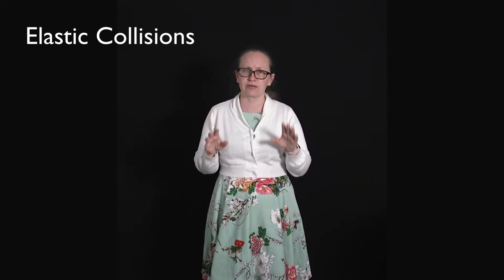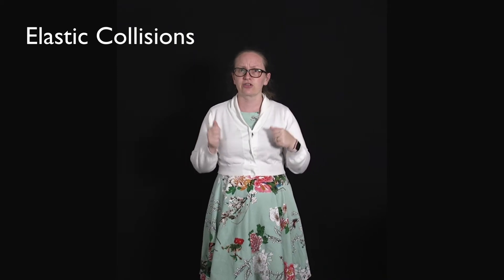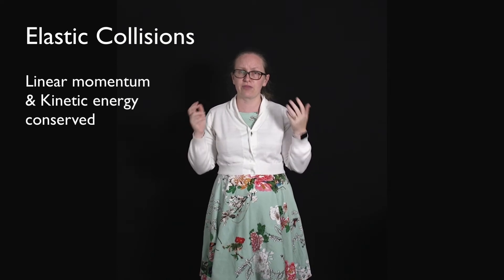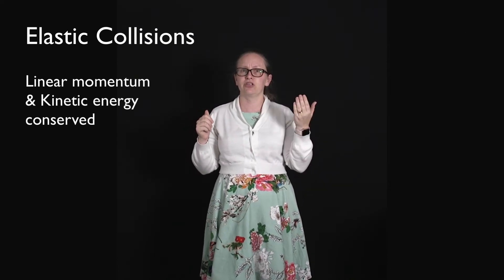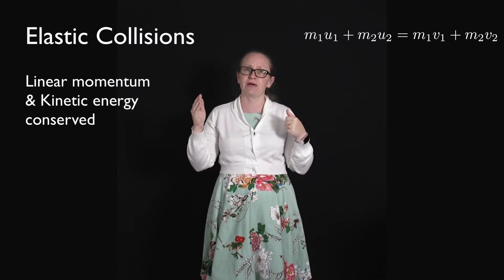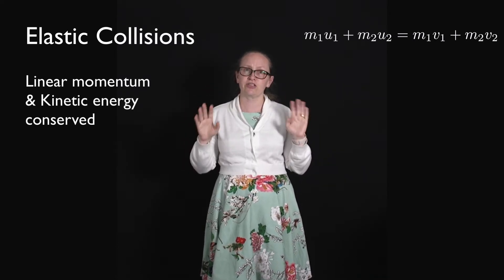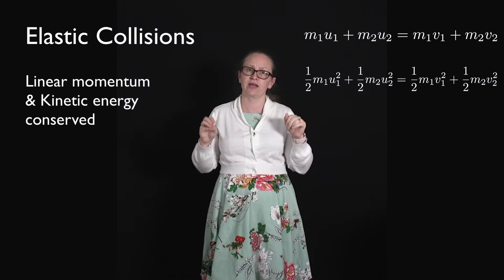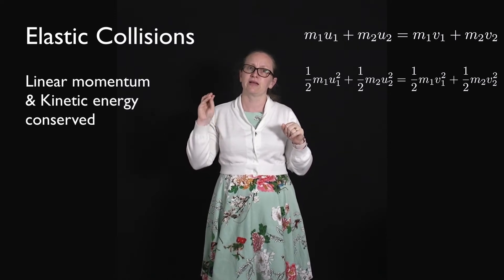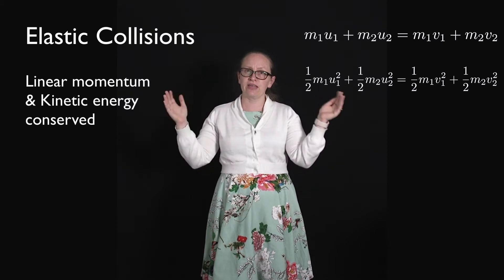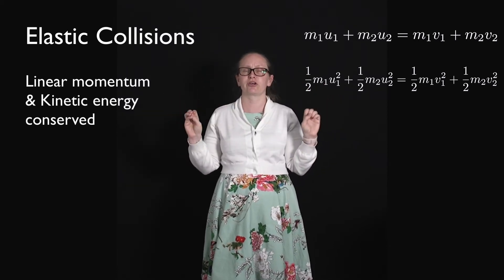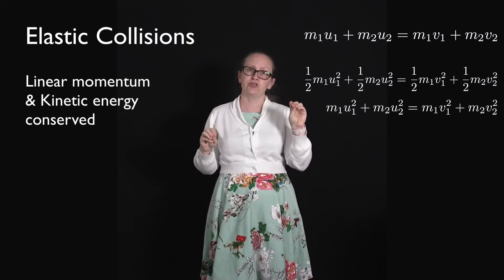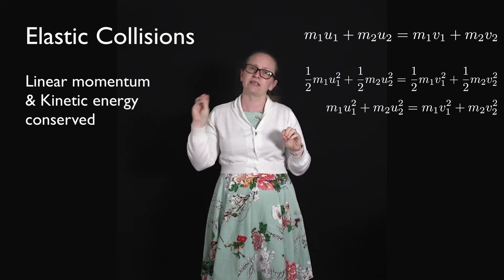Let's consider the equations we can use to describe elastic collisions. In elastic collisions, both momentum and kinetic energy are conserved. Conservation of momentum: M1U1 + M2U2 = M1V1 + M2V2. Conservation of kinetic energy: ½M1U1² + ½M2U2² = ½M1V1² + ½M2V2². Since there's a half in every term, we can cancel them out and write: M1U1² + M2U2² = M1V1² + M2V2².